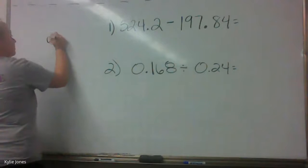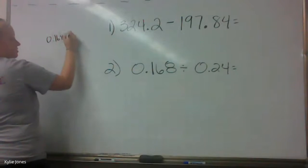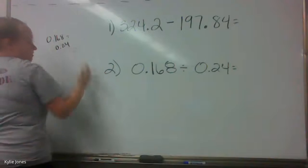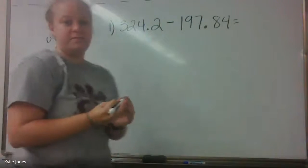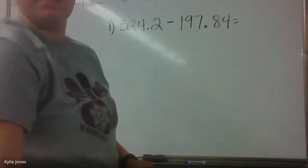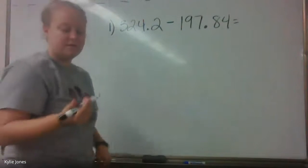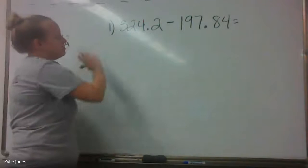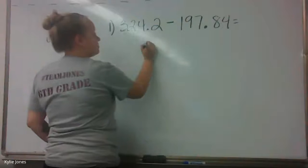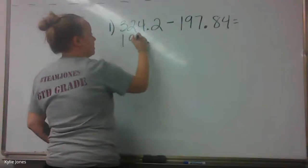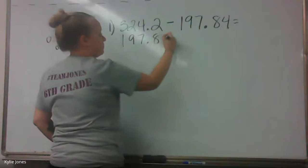Alright. Okay, Charlie, go ahead. Tell me how to do this. We're subtracting. Line up the decimals first. Yeah, we're going to line up our decimals first. So we have 324.2 minus 197.84. Okay, good, and we're subtracting. Now what?